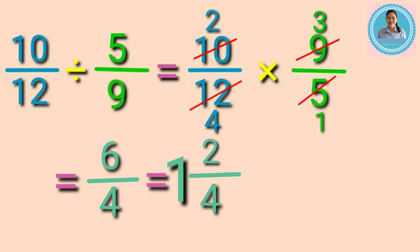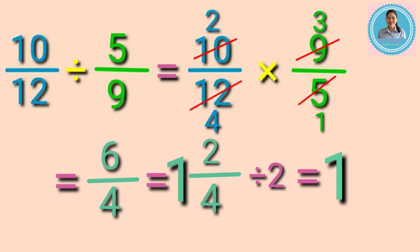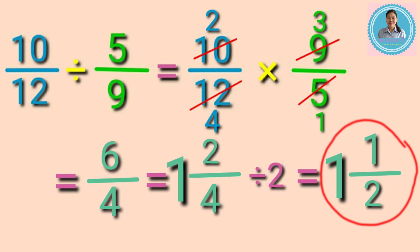We can still reduce the fraction to lowest term because two and four have a common factor. We divide by their GCF of two. Copy the whole number one, then two divided by two equals one, and four divided by two equals two. So the final answer is one and one half.